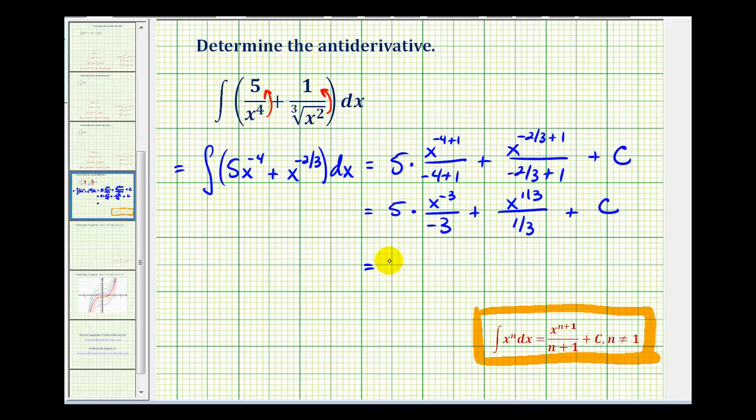This will be negative five-thirds, and then we'll move x to the negative three power back down to the denominator. So we'll have x to the positive third power here. Plus, now dividing by one-third is the same as multiplying by the reciprocal, so this will be three, and then x to the one-third would be the same as the cube root of x, plus our constant of integration.